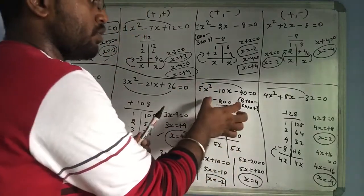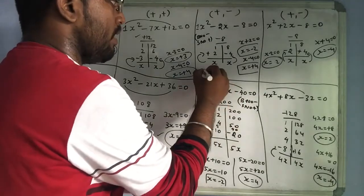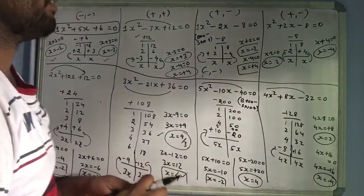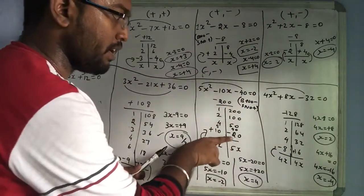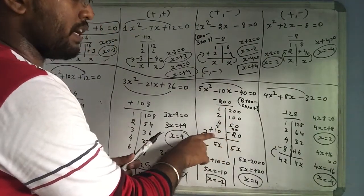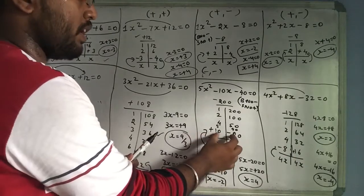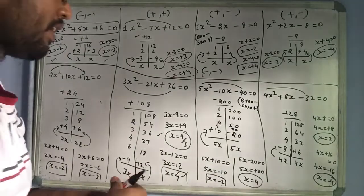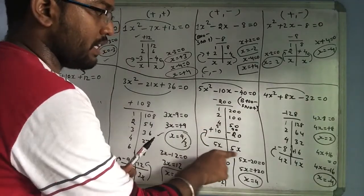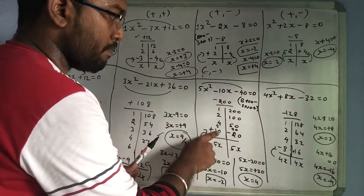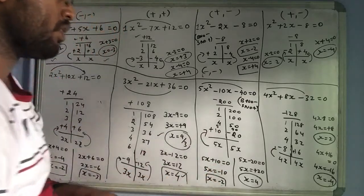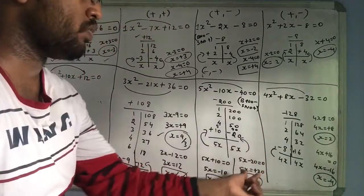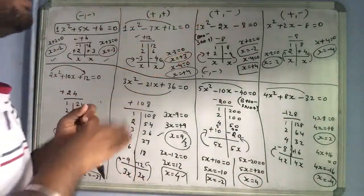If we need factors that multiply to minus 200 and add up to minus 10, the bigger number is negative and smaller number makes it positive. If we have 5x, the number 5x is equal to 0. If x is equal to minus 10, then x is equal to minus 2. If x is equal to plus 20, x is equal to 4. This is the most important concept.